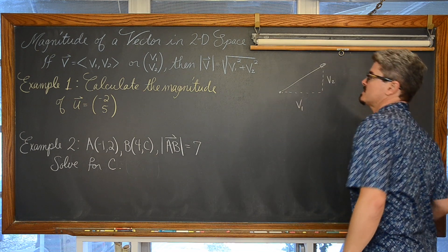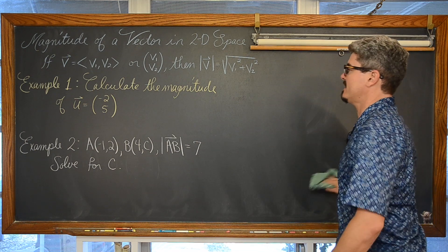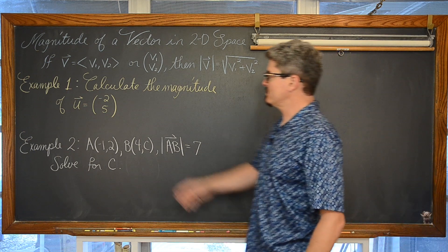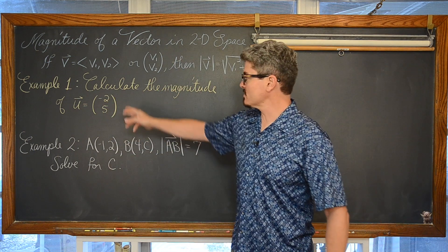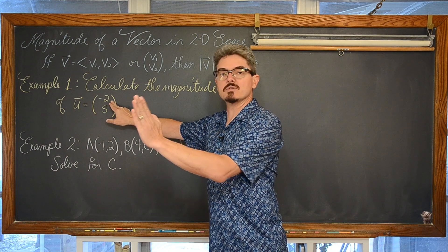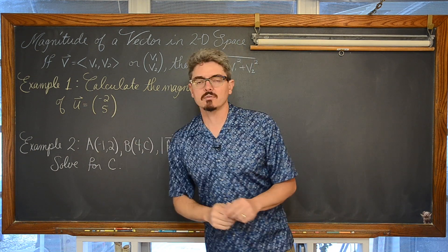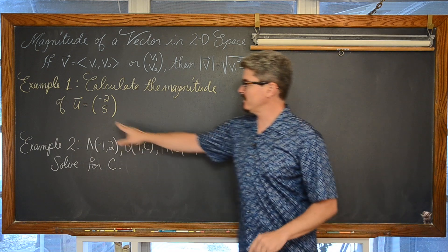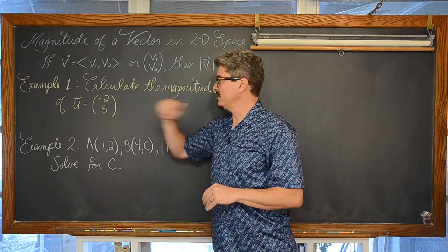So, example one, we are just going to calculate the magnitude of vector u with the horizontal component of negative 2, meaning we are moving 2 units to the left, and a vertical component of 5. So we are moving 5 units up on the y axis.